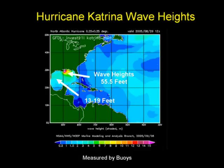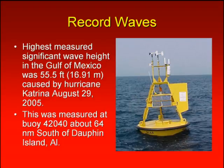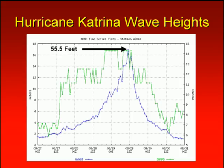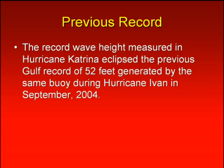These are significant wave heights. The highest measured significant wave height from Katrina was 55.5 feet on August 29th, measured from a NOAA buoy located 64 miles south of Dauphin Island, Alabama. This is a graphic that illustrates the 55.5 foot wave crest from Hurricane Katrina. The previous record was set from Hurricane Ivan back in September of 2004, at 52 feet.